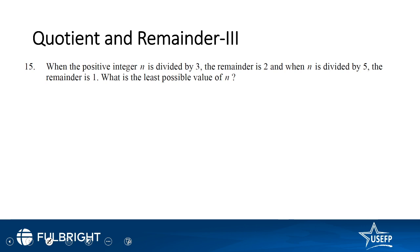Next question: when a positive integer n is divided by 3, the remainder is 2. When n is divided by 5, the remainder is 1. What is the least possible value of n? If n is divided by 3 and the remainder is 2, let's think about which values of n satisfy this condition.